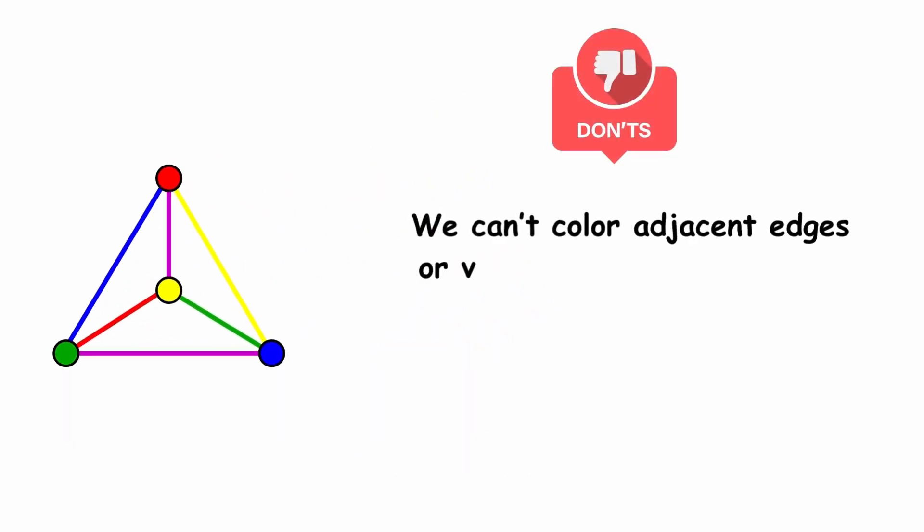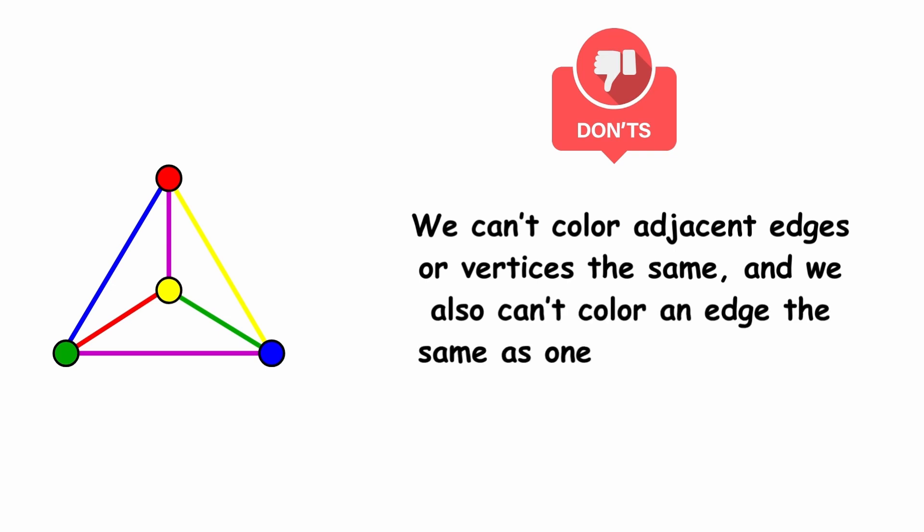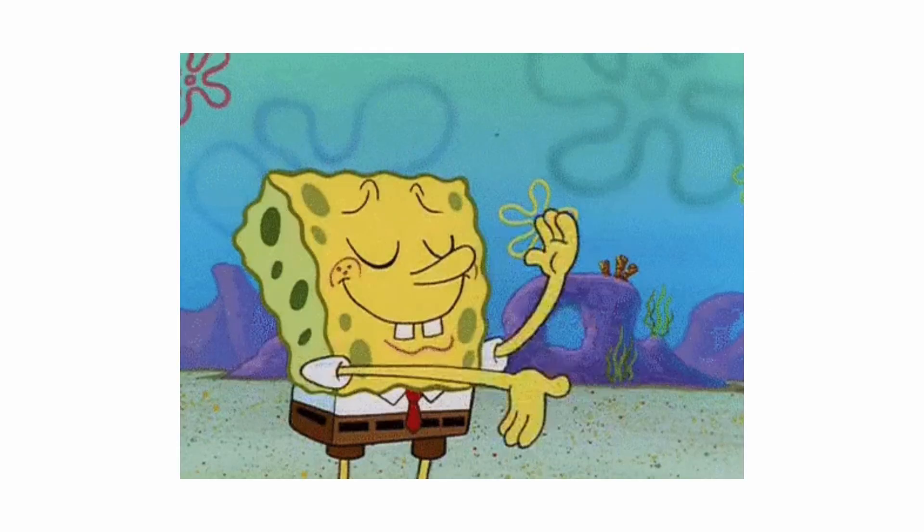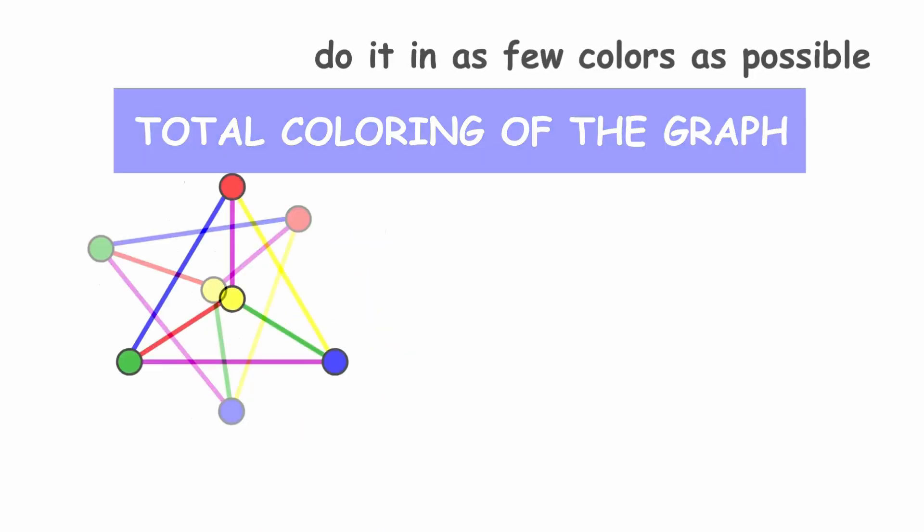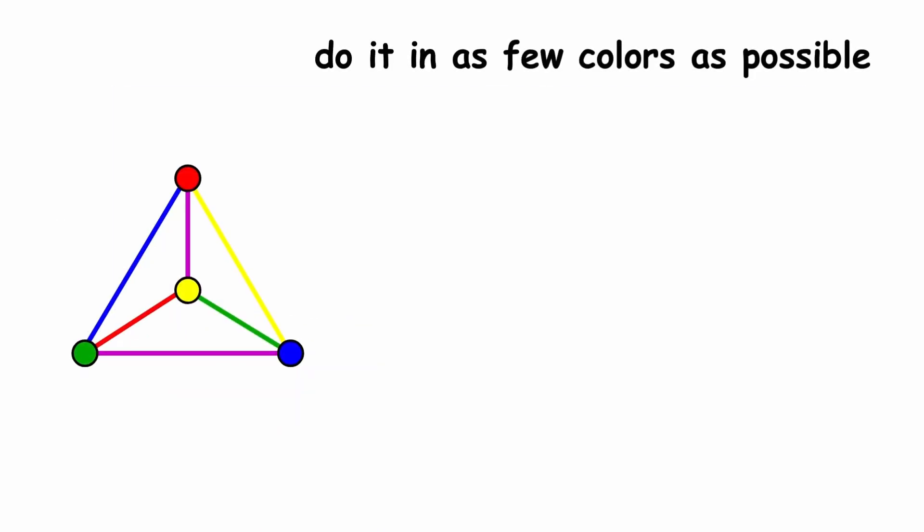We can't color adjacent edges or vertices the same, and we also can't color an edge the same as one of its endpoints. Once we are done, what we have is called a total coloring of the graph. If we do it in as few colors as possible, then the number of colors we use is the total chromatic number.